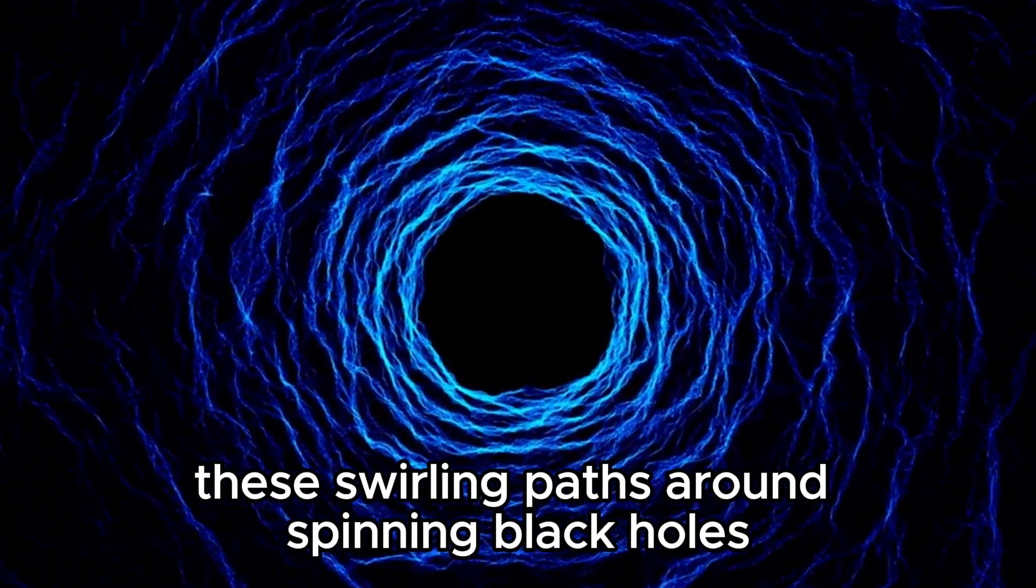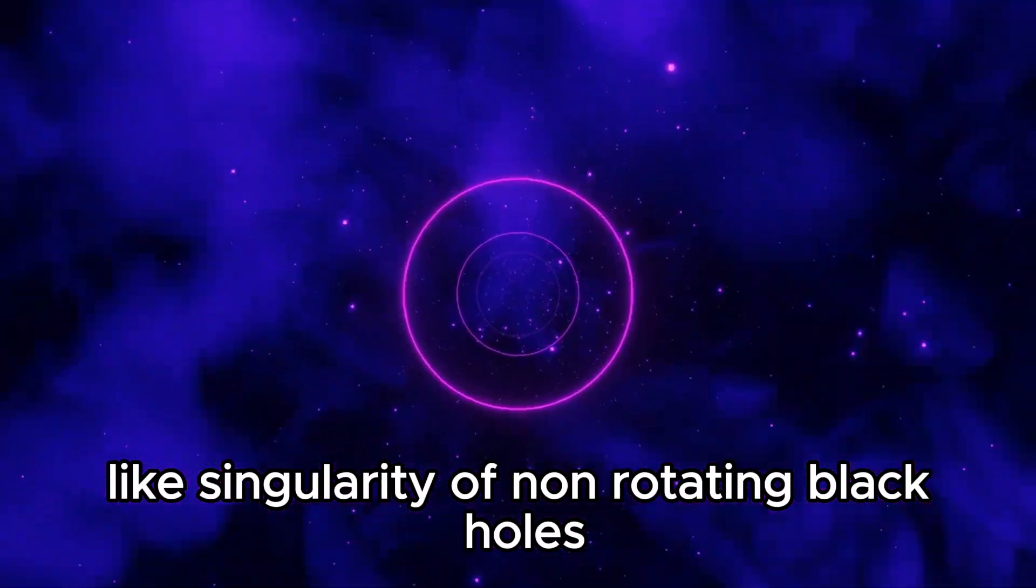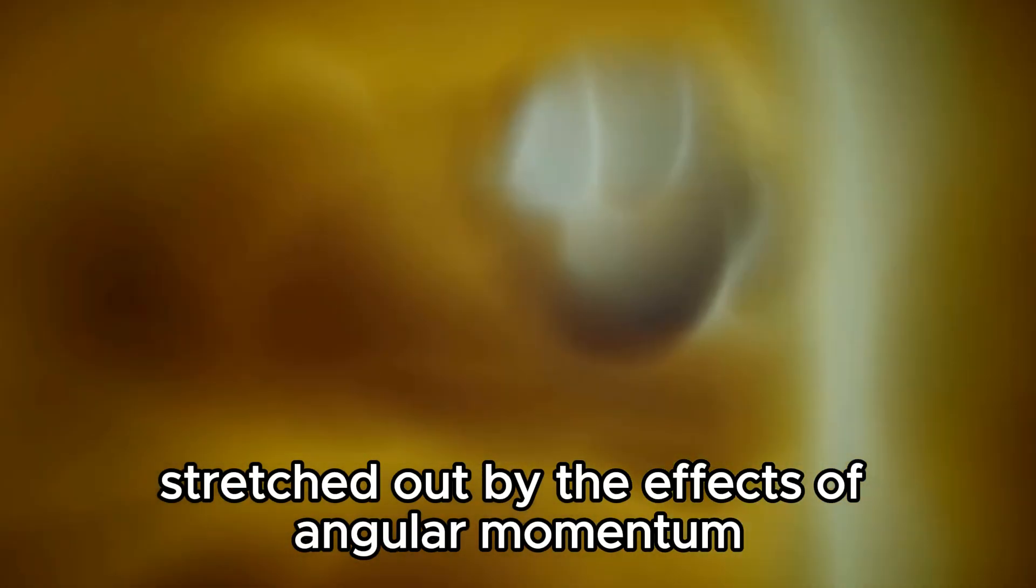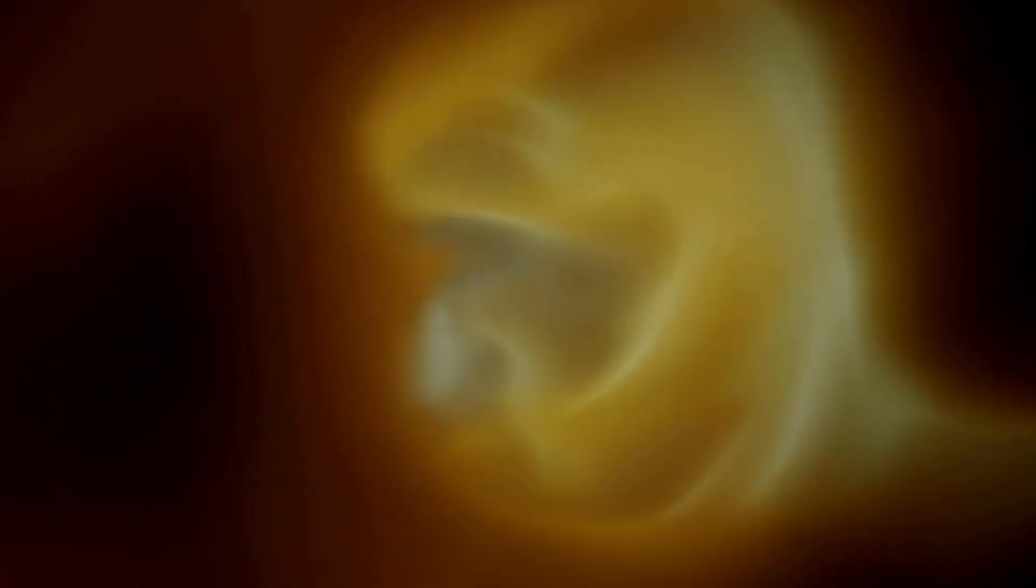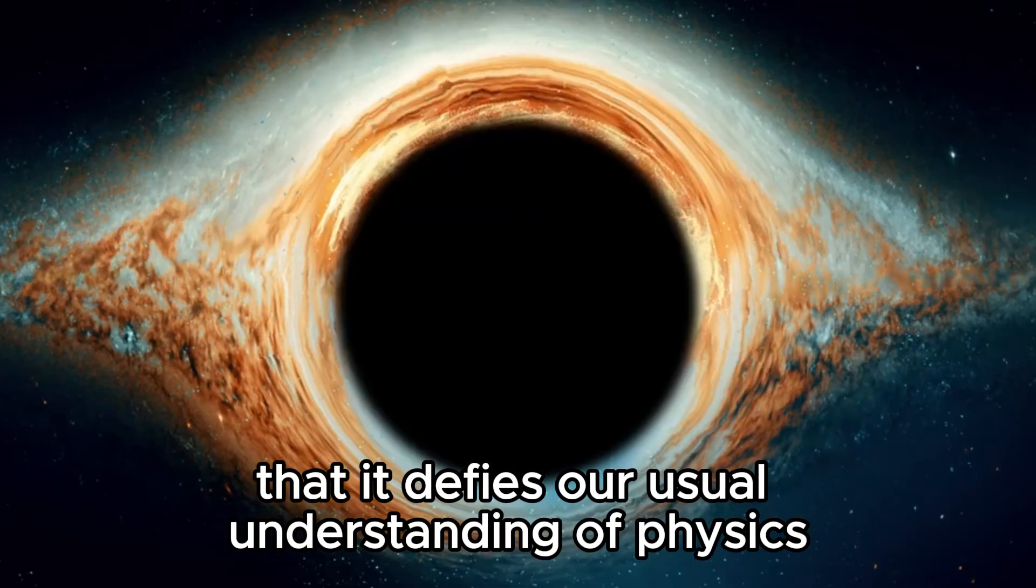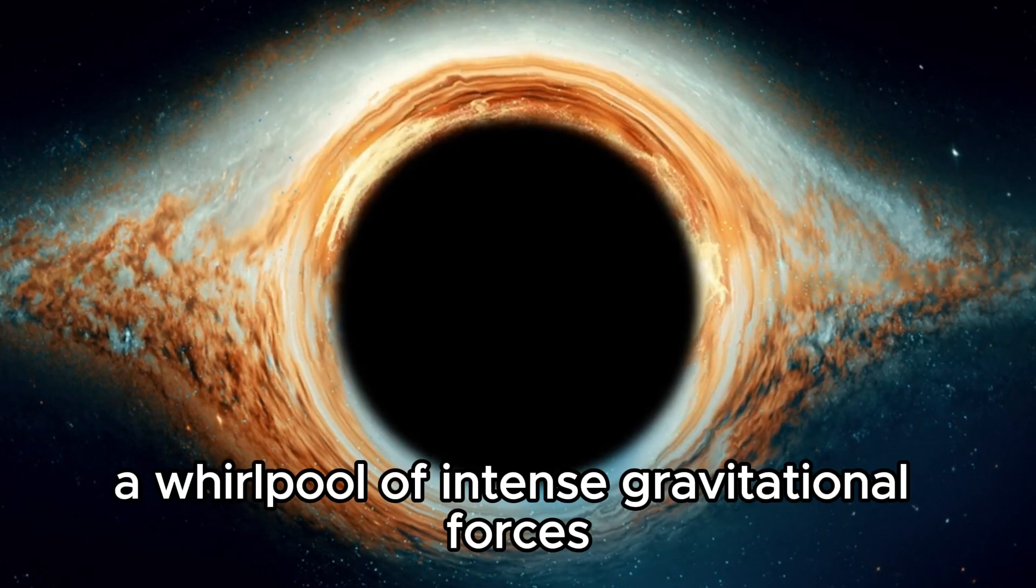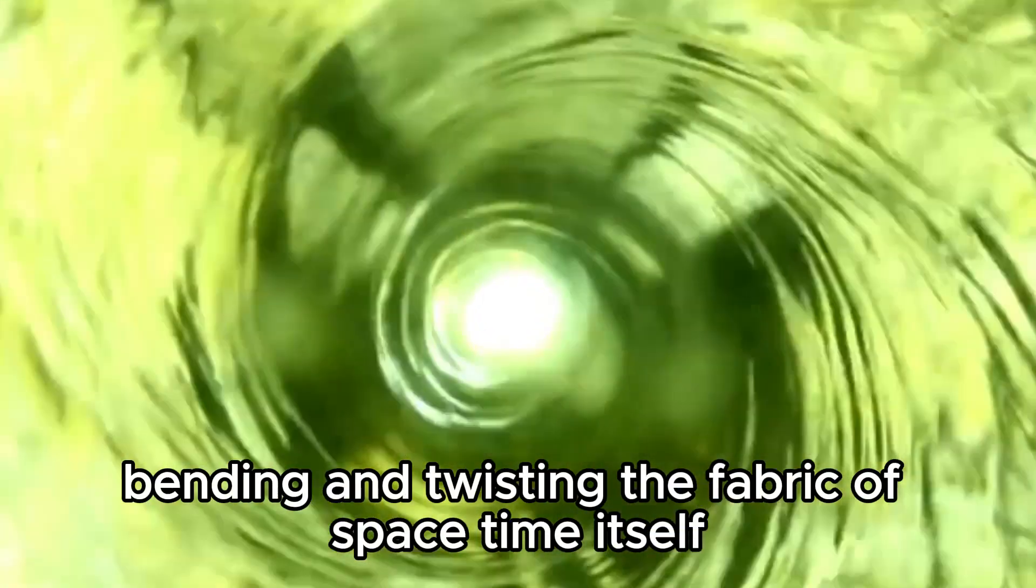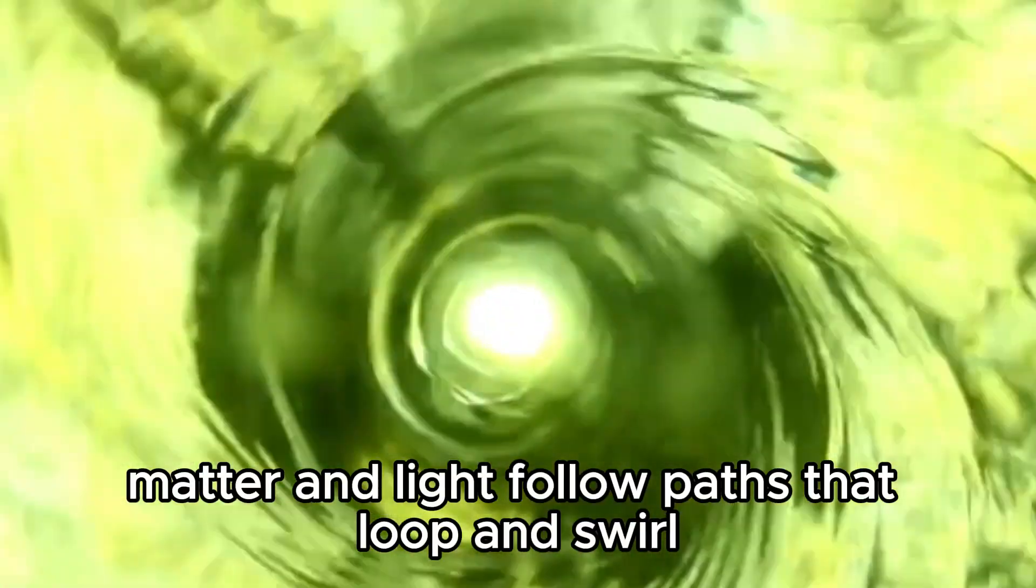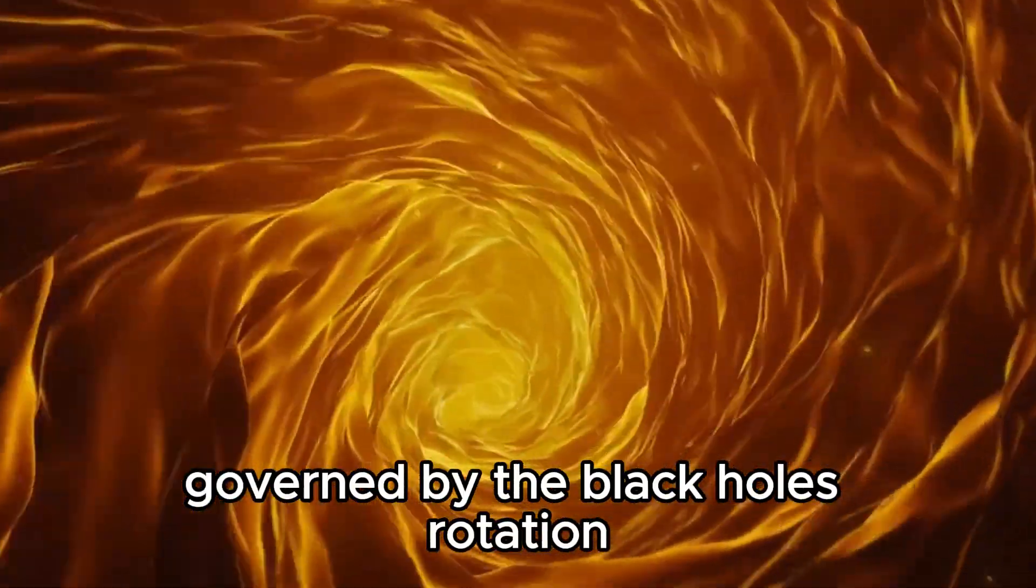These swirling paths around spinning black holes create what's known as a ring singularity. Unlike the point-like singularity of non-rotating black holes, this ring singularity is a gravitational feature stretched out by the effects of angular momentum. It represents a region where space-time is so contorted that it defies our usual understanding of physics. Imagine this ring singularity as a cosmic vortex, a whirlpool of intense gravitational forces bending and twisting the fabric of space-time itself. Within this vortex, matter and light follow paths that loop and swirl, tracing intricate patterns governed by the black hole's rotation.